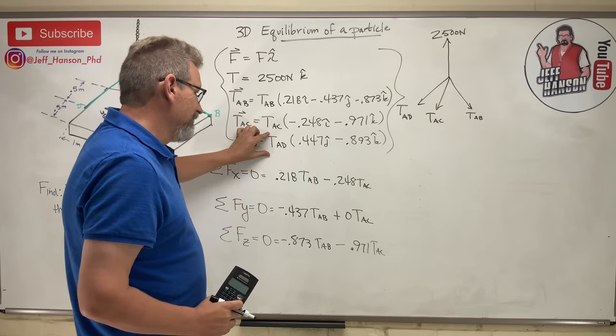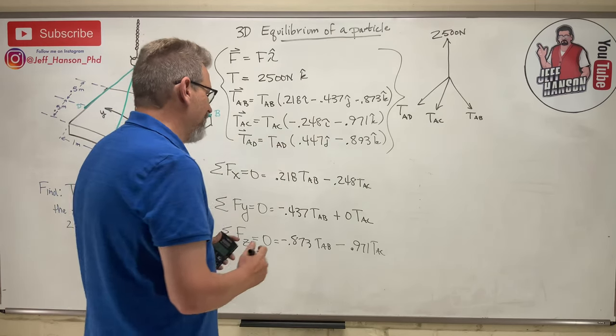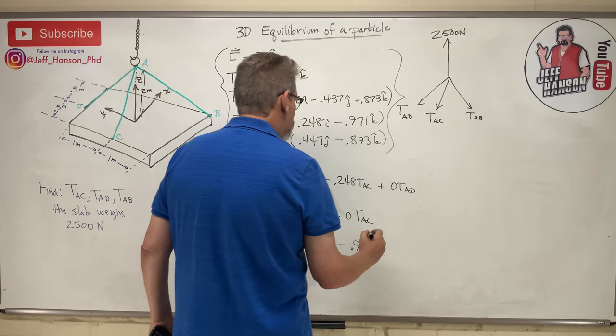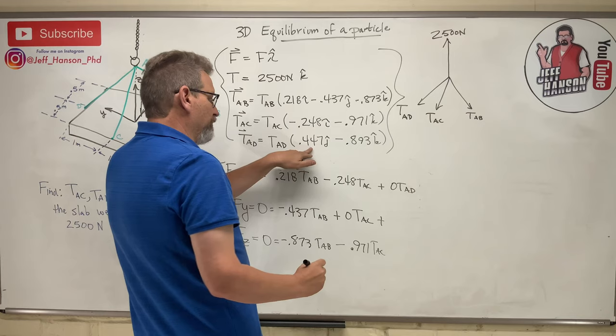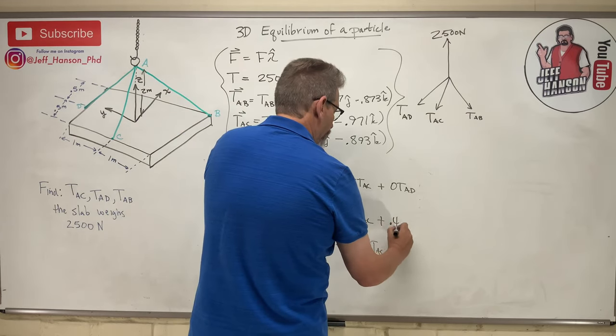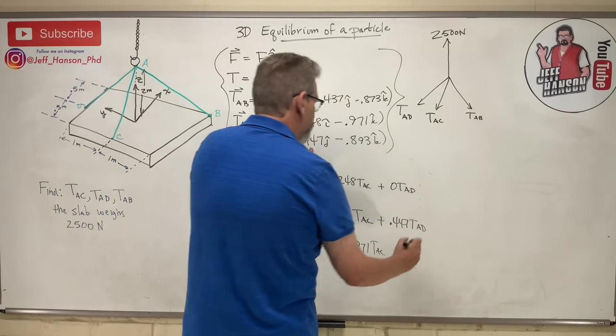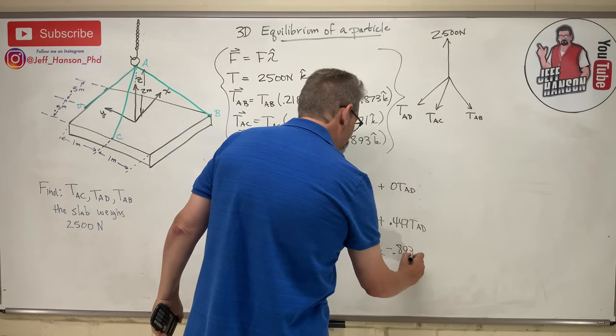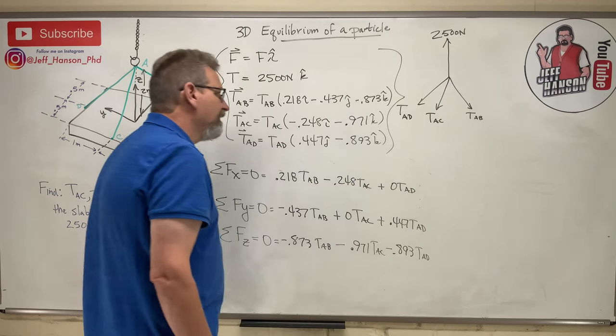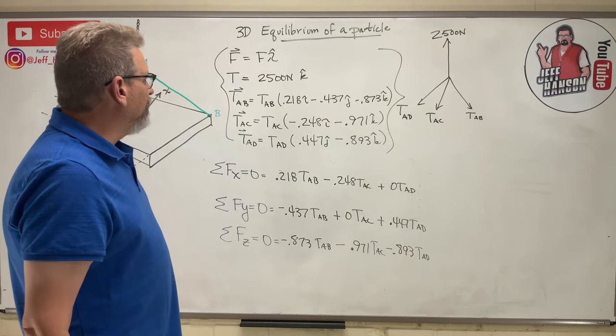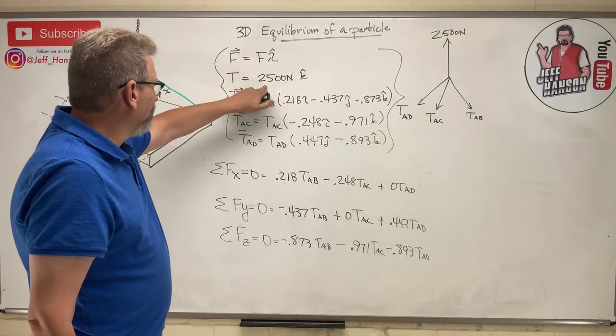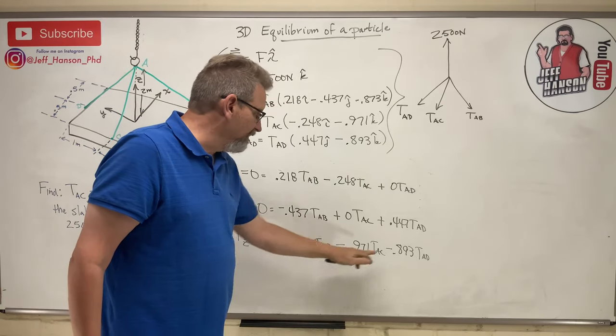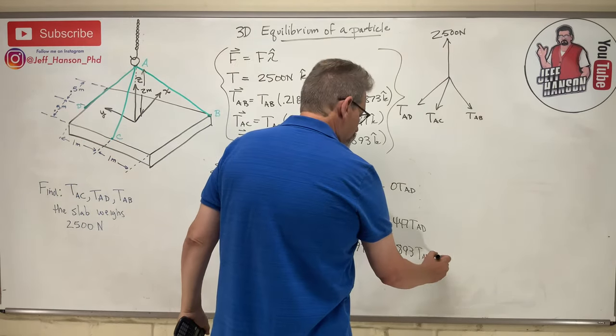We're on TAD. He's got a 0 in the i and he's got a j and a k. So plus 0 TAD. Plus 0.447 TAD. And then minus 0.893 TAD. And there's one more and that's this guy and he's going positive in the k hat. Now look, negative, negative, negative, and then a positive.